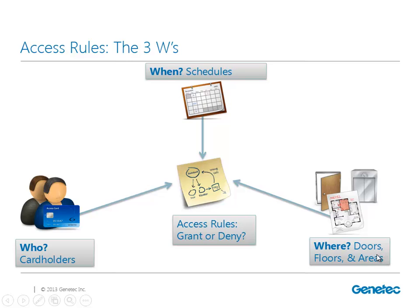I like to call areas a group of doors. For example, we have building number one and we have the perimeter doors to that building - those sets of doors within an area we can call the building number one area. The when, the who, and the where are the three components to the access rule. Some access rules only have two components, but if we don't complete this triangle with the 'where,' then we're going to have access rules that really don't do anything - they're not complete. So we've got to have our three W's.